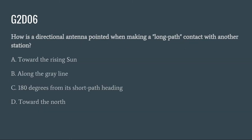G2D06: How is a directional antenna pointed when making a long path contact with another station? A. Toward the rising sun. B. Along the gray line. C. 180 degrees from its short path heading. Or D. Toward the north. The correct answer is C: 180 degrees from its short path heading.